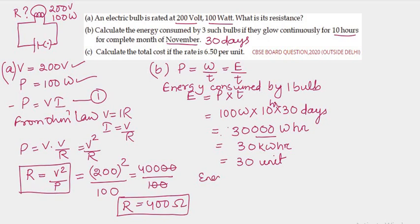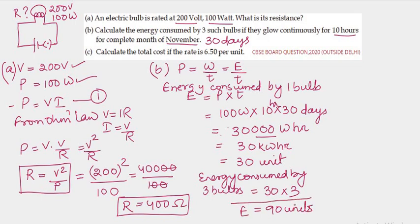So energy consumed by 3 bulbs is equal to 30 into 3, that is 90 units. So energy consumed by 3 bulbs is 90 units if they are continuously used for 10 hours daily for 30 days.